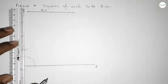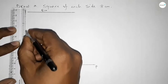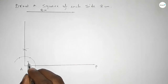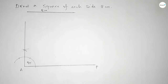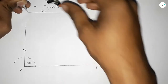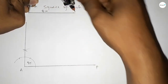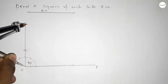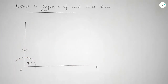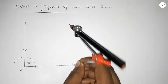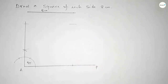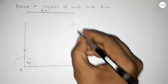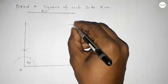Now joining this point — 90 degree angle is formed. Next, taking the length 8 centimeter using compass, putting the compass here and cutting here. With same length, putting the compass here and drawing arc, then putting the compass here and cutting here, so both curves intersect at a point.